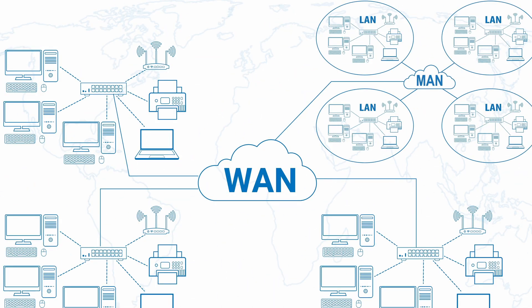The subnet mask helps devices identify if they're on the same local network or on different external networks. The default gateway is your router — the device at the edge of your network used to communicate with external networks. The DNS server is the server used to translate domain names into IP addresses so your computer can find and connect to other websites.